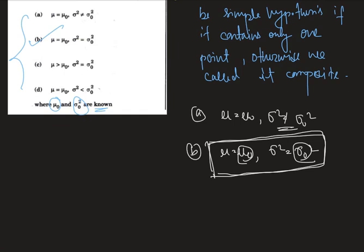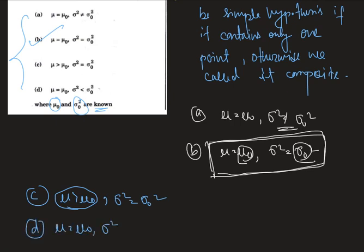As it is an MCQ type question there is no need to check the other options, but for convenience we check them also. Option C is μ > μ₀ and σ² = σ₀² — here μ doesn't contain only one point. And option D, μ = μ₀ and σ² < σ₀², the σ² doesn't contain only one point. Therefore it is pretty much obvious that option B is the correct one.